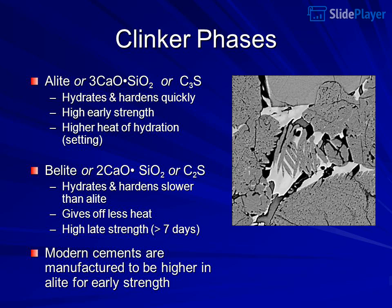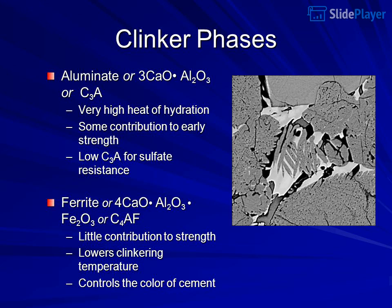Clinker phases: Alite (C3S — tricalcium silicate) hydrates and hardens quickly, providing high early strength and higher heat of hydration. Belite (C2S — dicalcium silicate) hydrates and hardens more slowly than alite, gives off less heat, and provides high late strength greater than seven days. Modern cements are manufactured to be higher in alite for early strength.